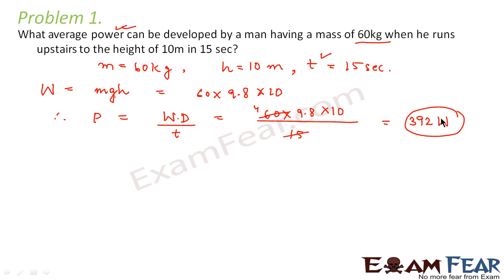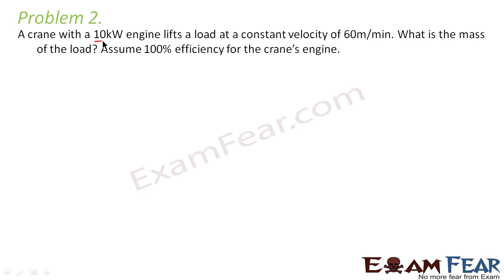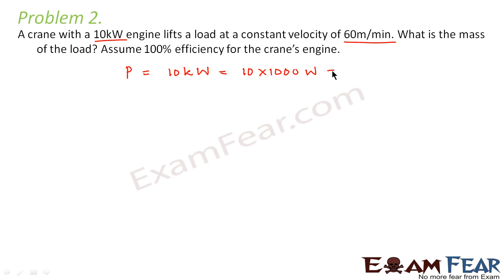So 392 watts is the average power developed by the man having a mass of 60 kg when he runs upstairs to a height of 10 meters in 15 seconds. Let us look at the second problem. The problem says: a crane with a 10 kilowatt engine lifts a load at a constant velocity of 60 meters per minute. What is the mass of the load?